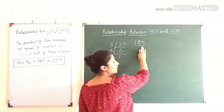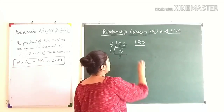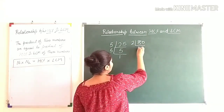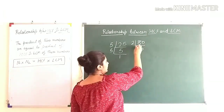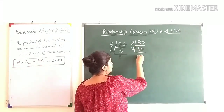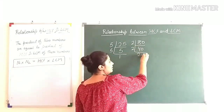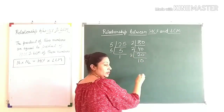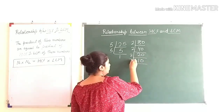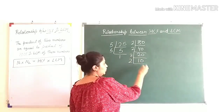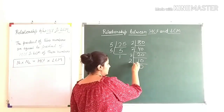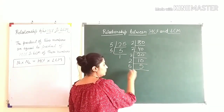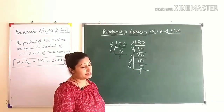For 80, it is an even number, so I can divide it by 2. 2 fours are 80, giving 40. Again, 2 twenties are 40. Again, 2 tens are 20. Again, 2 fives are 10. 5 is a prime number, so it can only be divided by 5 itself.